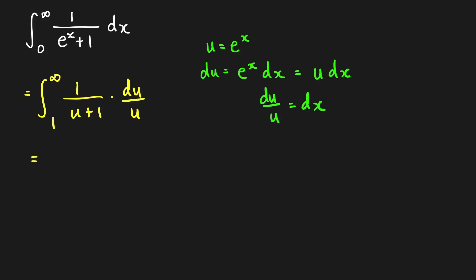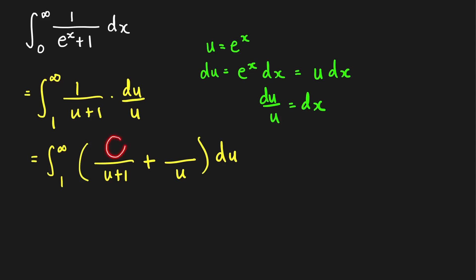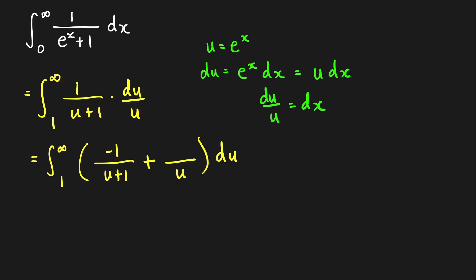We update the limits of integration: when x equals 0, u equals 1; when x goes to infinity, u goes to infinity. Now we do a partial fraction decomposition of 1/(u(u+1)), giving us integral from 1 to infinity of (A/(u+1) + B/u) du. Using the cover-up method: when u equals negative 1, A equals negative 1; when u equals 0, B equals 1.